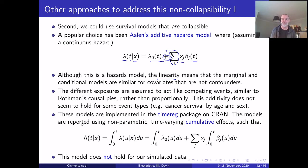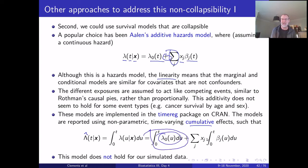Results from Aalen's model are reported using non-parametric time-varying cumulative effects, so you get the cumulative baseline and cumulative covariate effects — to get instantaneous effects you need to differentiate these. This model does not hold for our simulated exponential data.